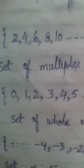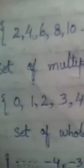B = {0, 1, 2, 3, 4, 5}. Answer: B is a set of whole numbers.